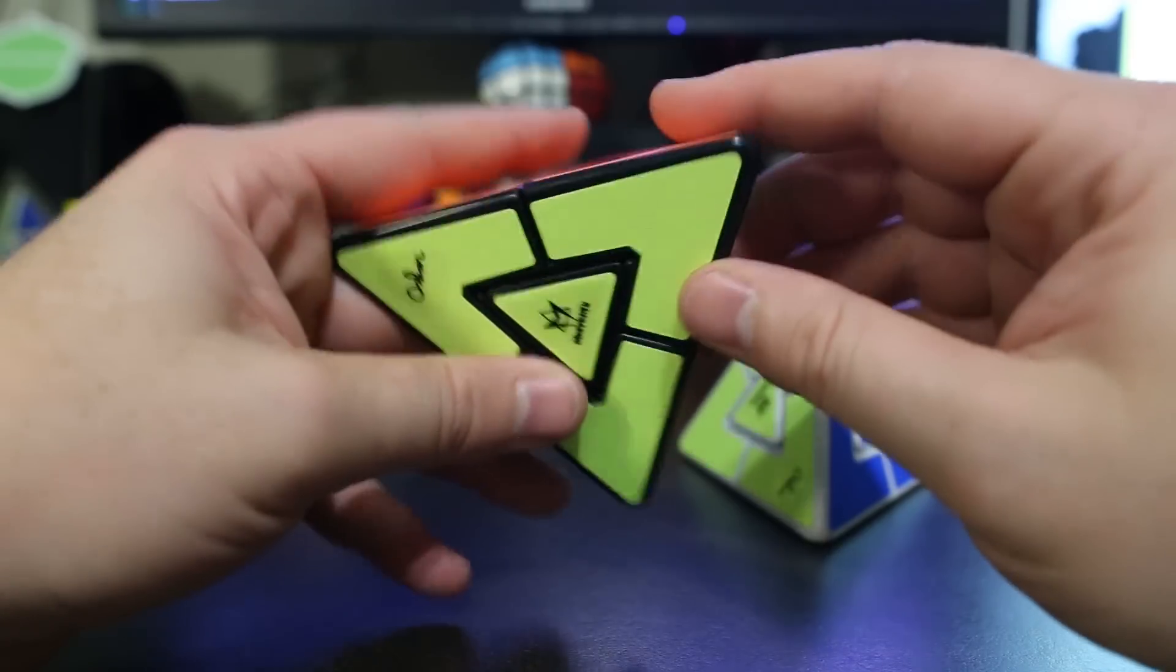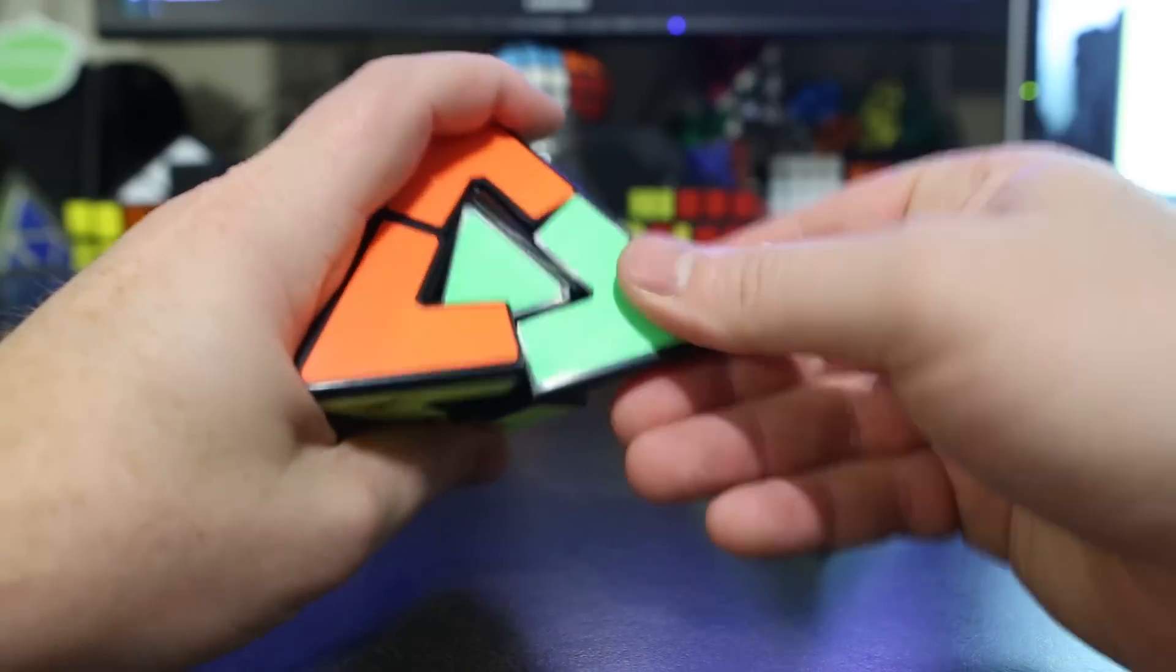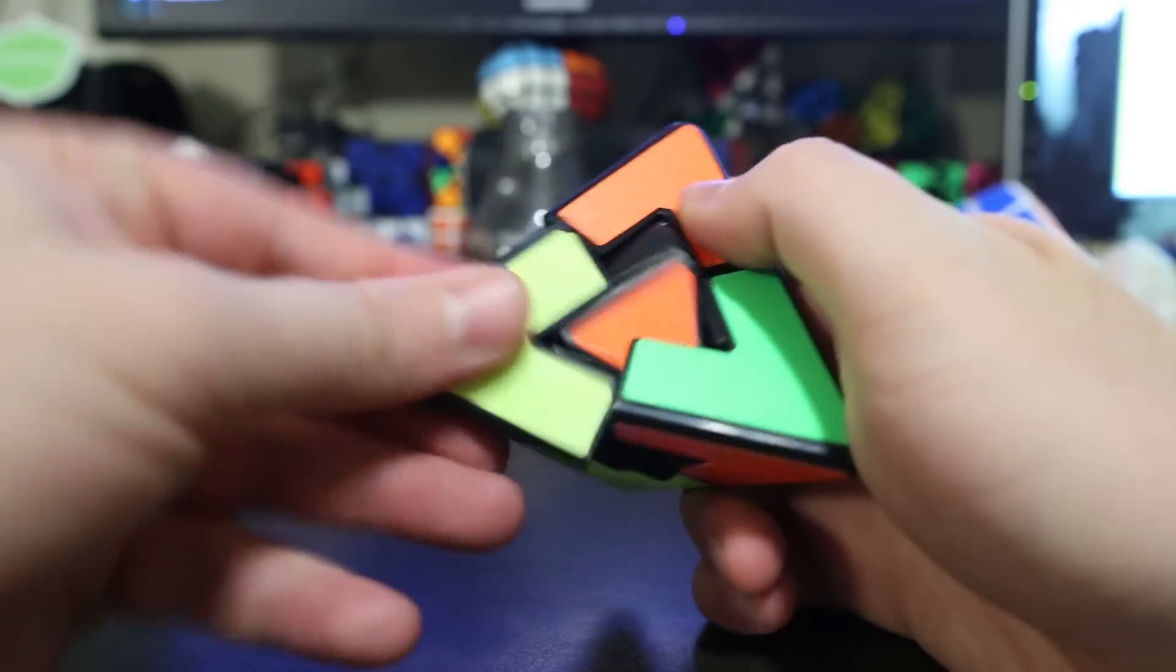Anyway, the way it turns is you can turn the corners, and as you can see, when you turn a corner the center comes along with it. So if we turn this corner, the center now goes with it as well.